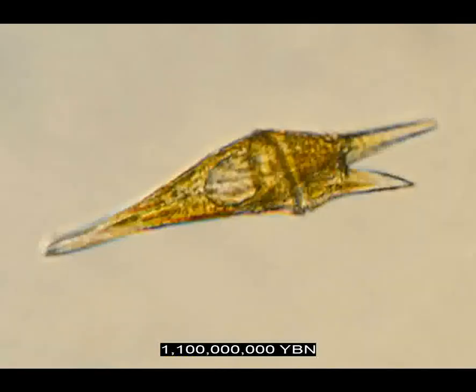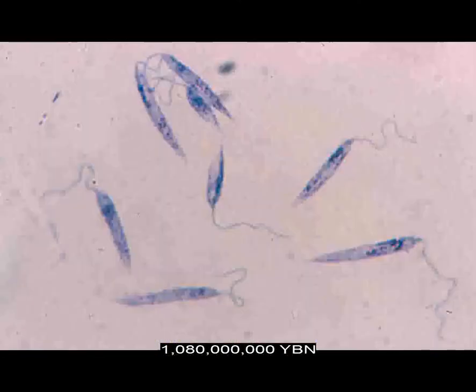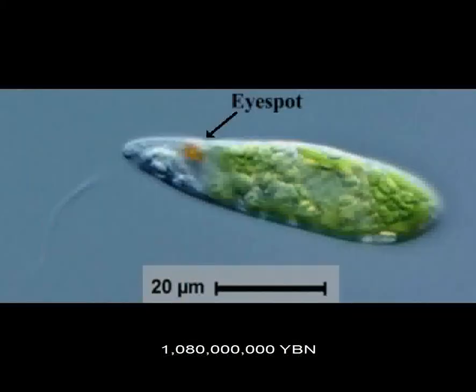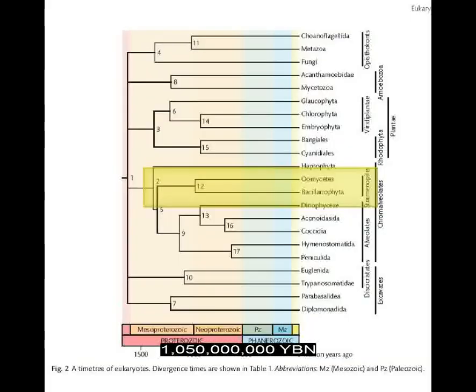The protist phylum dinoflagellata evolves. The excavates discicristates evolve — the ancestor of protists with mitochondria with discoidal-shaped cristae, including euglenids, leishmanias, trypanosomes, and acrasid slime molds. A eukaryote eye evolves — the first three-dimensional response to light. The earliest eye probably evolves from a plastid. The first proto-eye is a light-sensitive area in a unicellular eukaryote. Eukaryotes are the first organisms to evolve the ability to follow light direction in three dimensions in open water. Colonialism — where cells form a colony — evolves for the first time in eukaryotes.